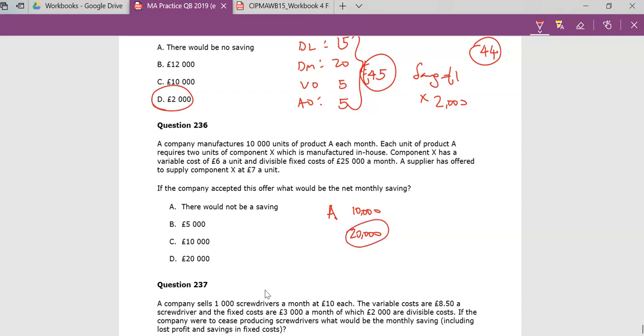So we're dealing with the 20,000 units of X. It's just a little sort of story to start, but just work out what they're looking for. And they're telling us that each component of X has variable cost of 6, and a divisible fixed cost of 25,000 a month. So that's 25,000 over 20,000 gives us a pound 25. So an additional variable cost of 1 pound 25, giving us 7 pound 25.